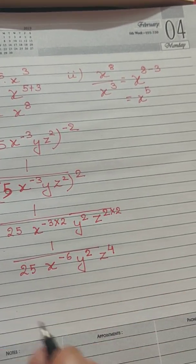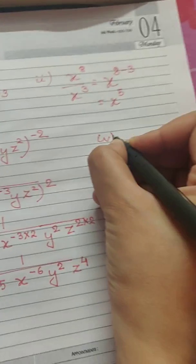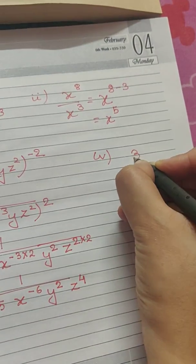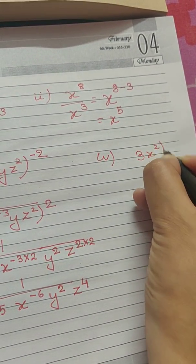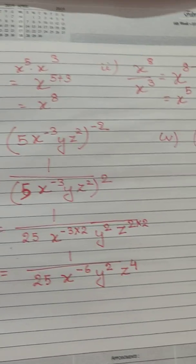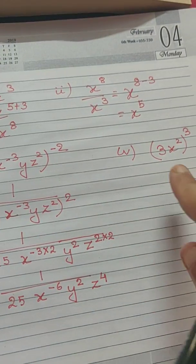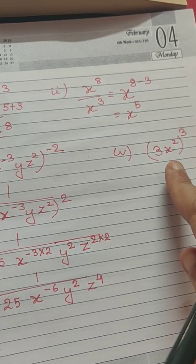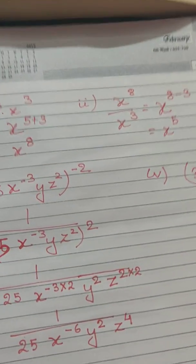You have one homework from this question also, which is this. I am writing it down: question 3x square, whole raised to the power 3. I hope you have understood these three sums, and this is your homework. You have another homework which I am showing you right now.